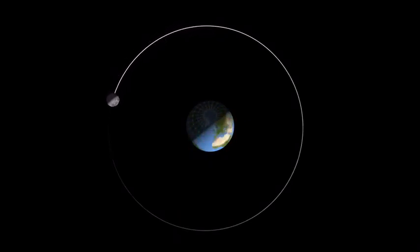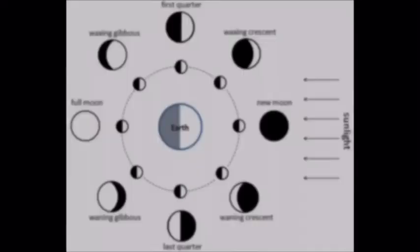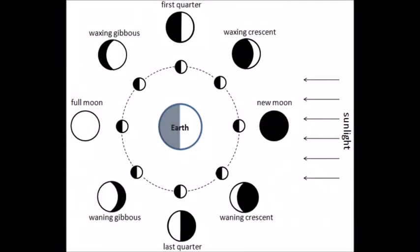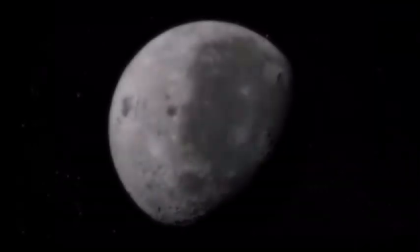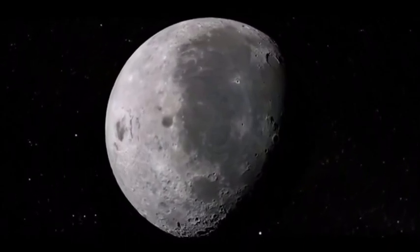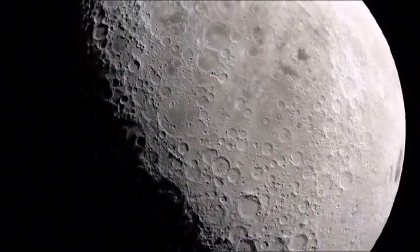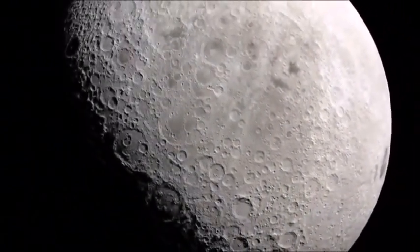Despite how bright it looks in the sky, the moon does not have any light of its own. It only appears to shine because light from the sun hits it and bounces off. Just like the earth, the moon has a day side and a night side, with half in sunlight and half in darkness at any time. As the moon travels its orbit, the dividing line between day and night — called the terminator — is visible from different angles, giving the impression that different amounts of the moon are lit up on different days.